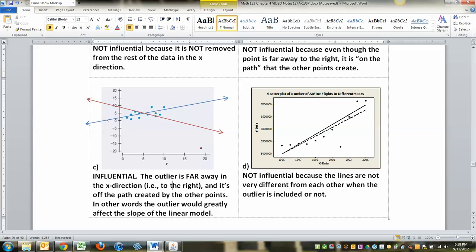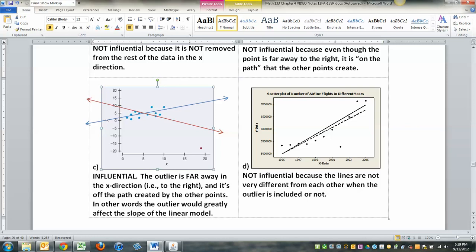What about C? Now, C, I drew two lines just to give you a sense. The blue line here is just the points up here, the blue dots up here making that line. And then kind of a red line to include this pinkish dot down here. And what happens is when that pinkish dot gets thrown in the mix, the line kind of tilts over to accommodate for it. So this outlier is far away in the x direction, far to the right, but it's also off the path that the other dots create. That's very much an influential outlier. In other words, I wrote down here, that outlier greatly affects the slope of the model that makes it influential.